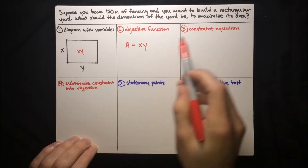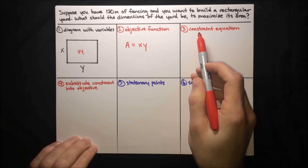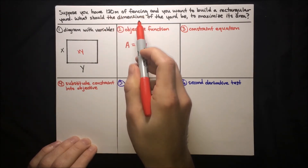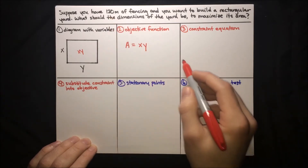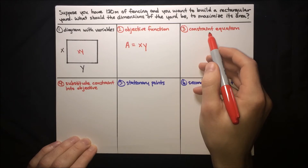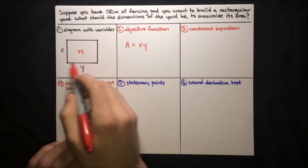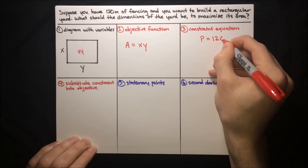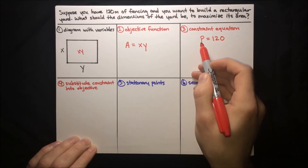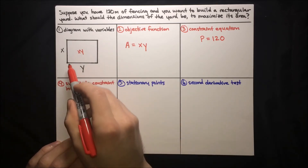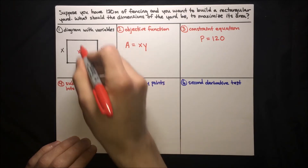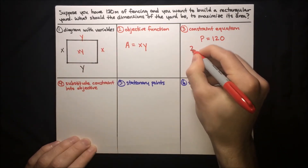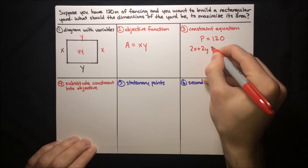First, we need to consider our constraint — some sort of limitation that we have. Our limitation here is the 120 meters of fencing. We can't build a yard with more than 120 meters of fencing because that's all we have. So our constraint is going to refer to the perimeter of the yard. The perimeter can only be 120 meters. So let's write: perimeter equals 120, and express the perimeter in terms of x and y. Perimeter is x plus x plus y plus y — the sum of the sides — so that's 2x plus 2y equals 120.